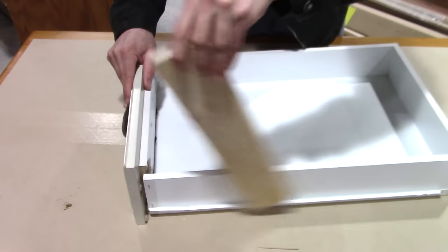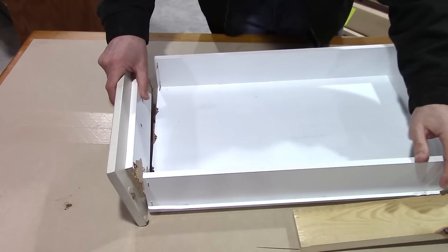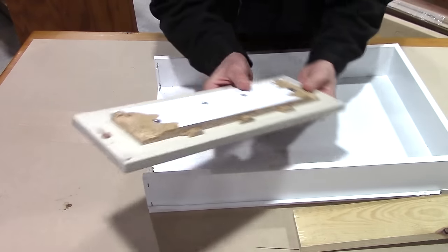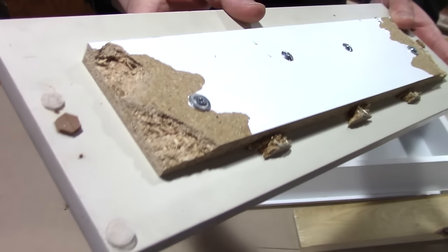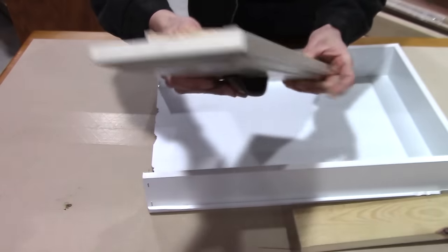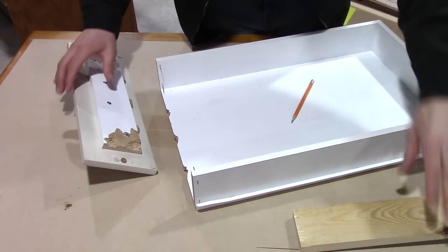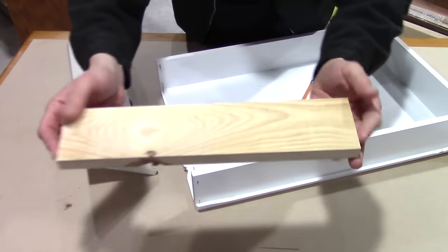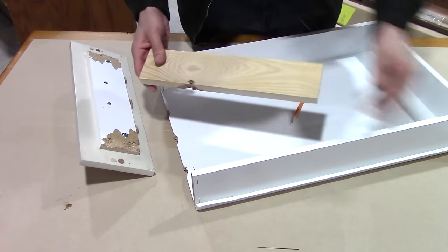The second reason why these break all the time is you can see what this is made out of. It's just particle board and that's really weak anyway. So what do you do? I'm going to use a piece of pine to replace this. I'm not going to replace it with particle board.